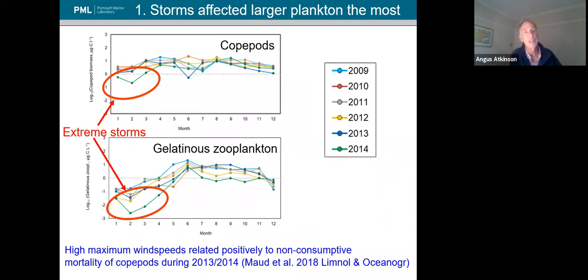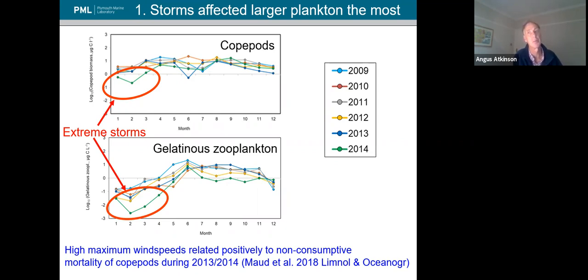The disruption of the size spectrum was probably due to the larger end — specifically copepods and gelatinous zooplankton — which seem to be the only groups particularly badly affected by the storms. The jellies were an order of magnitude down. Fortuitously, PhD student Jackie Maud at PML was looking at natural mortality of copepods and found a significant increase in copepod carcasses when wind speeds were high, suggesting that extreme turbulence during these storms was actually killing the zooplankton.